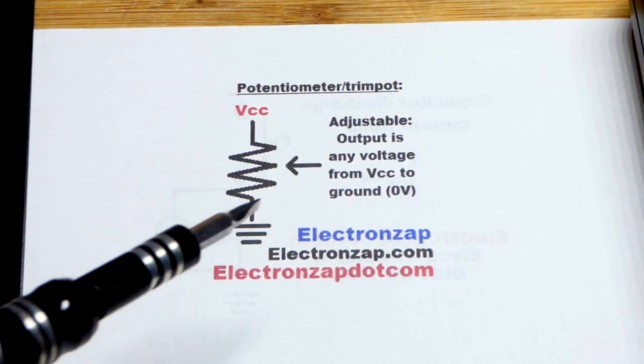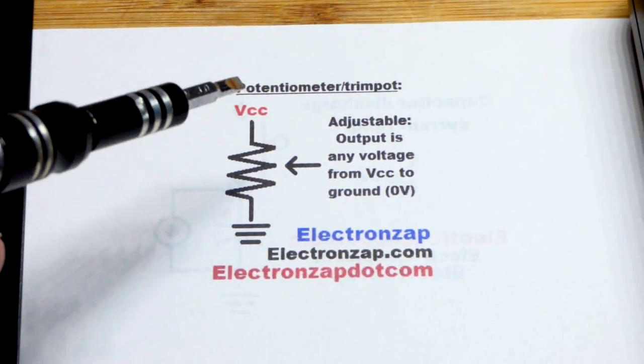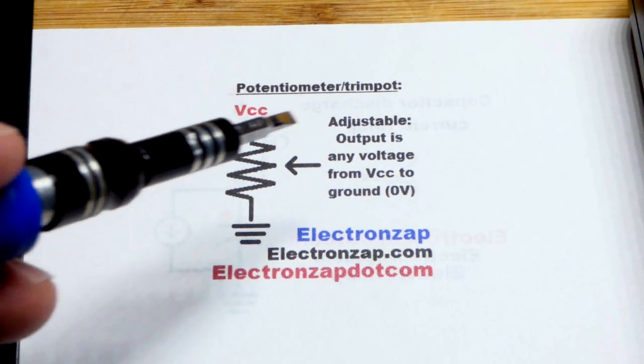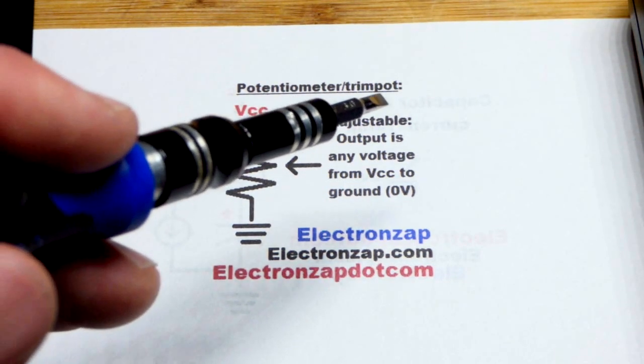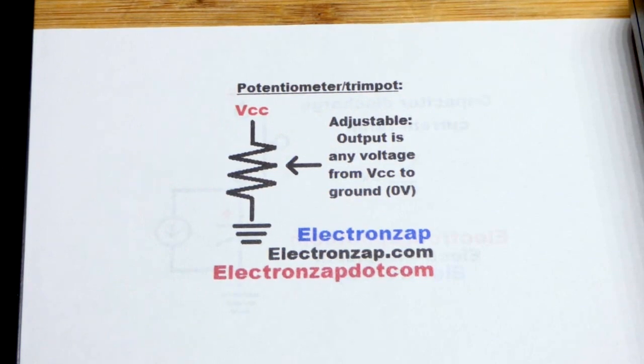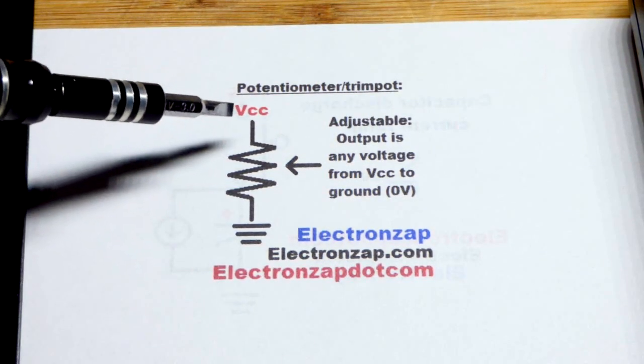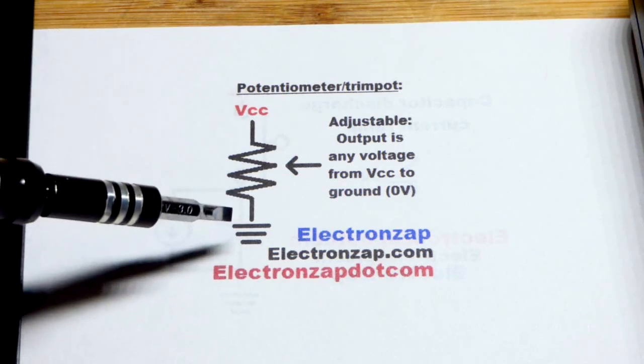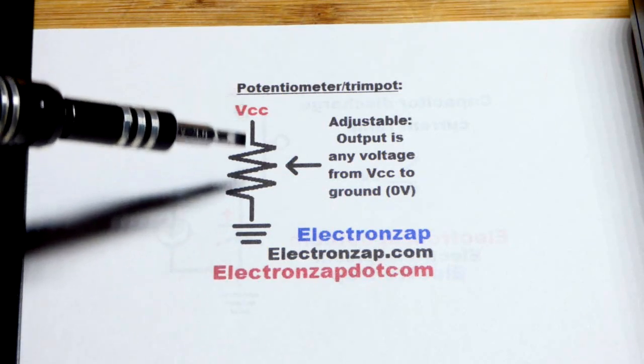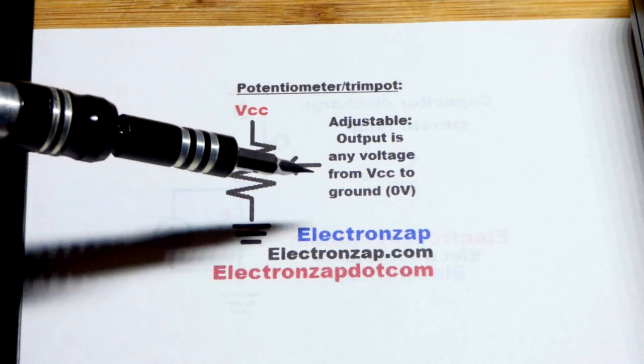In this video we're going to quickly look at a voltage divider using a trimmer potentiometer, which is usually shortened to trim pot. It has the property that you put the power supply across it, usually the full power supply but it doesn't have to be, and whatever voltage you have across it.